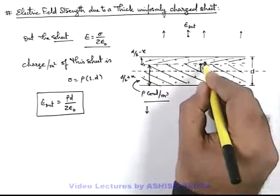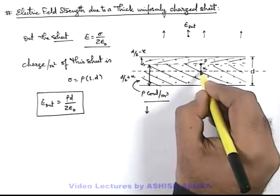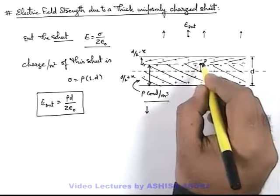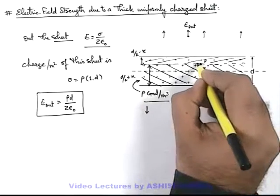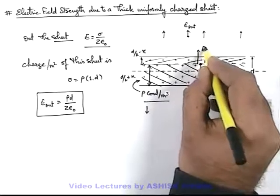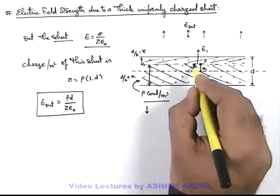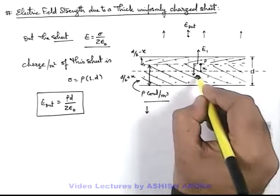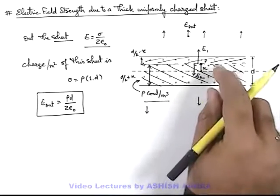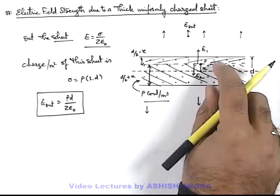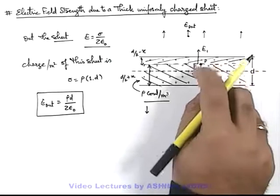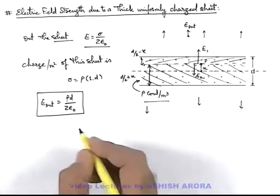Then at this point P which is inside the sheet at a distance x from the central plane, due to the lower sheet electric field will be in upward direction say it is E₁, and due to this upper part of sheet electric field at point P is in downward direction it is E₂. And as the lower sheet is of more thickness, E₁ will be greater than E₂.